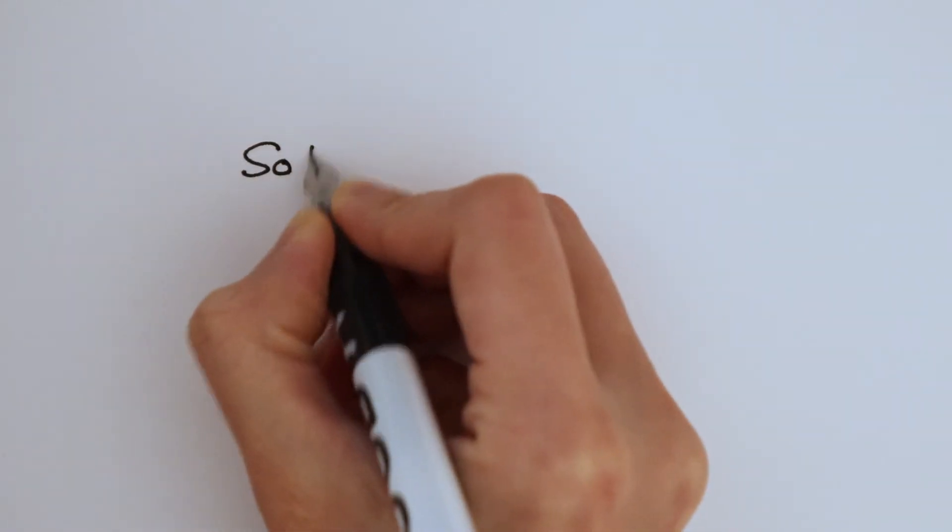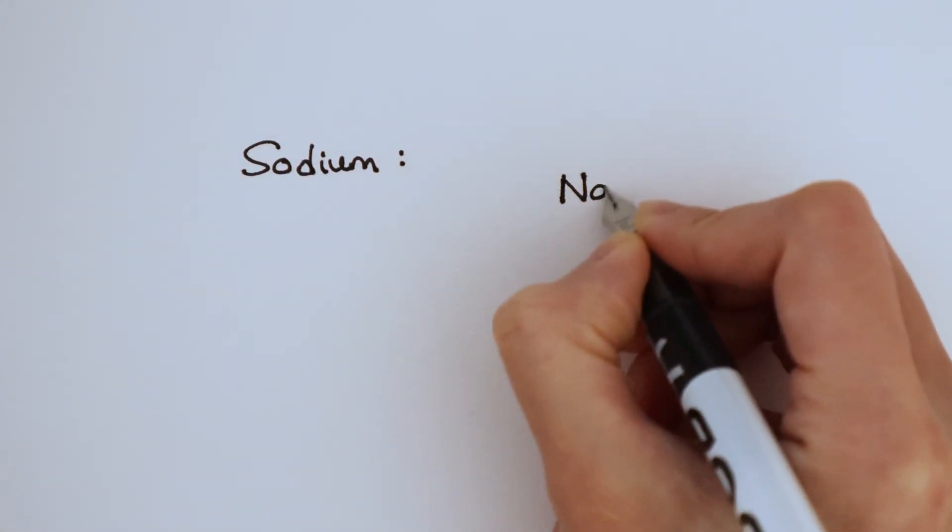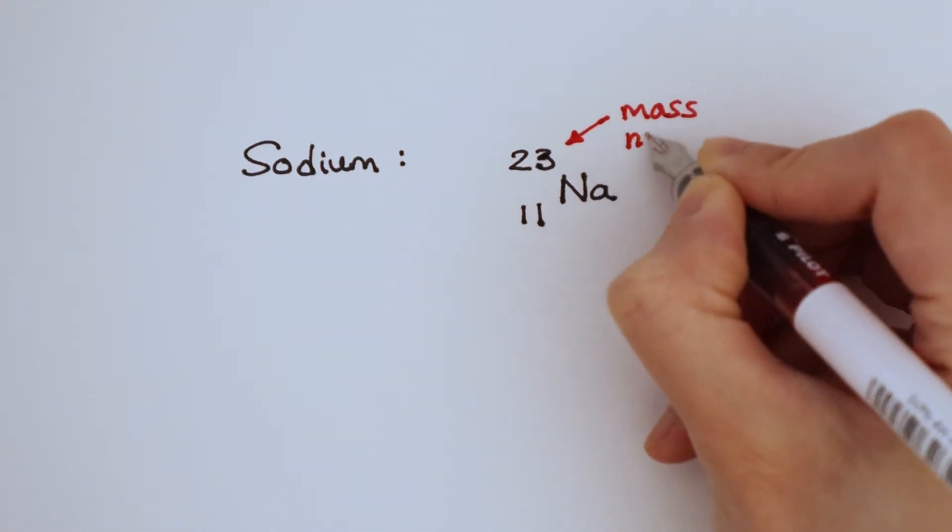Here's another example. The symbol for sodium is Na, and we're given the mass number and the atomic number.